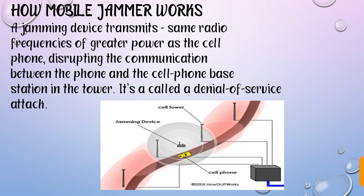How do Mobile Jammers work? This is a jamming device — you can see it in the figure. It transmits on the same radio frequency but with greater power than the existing signals. It sends signals with greater power, disrupting the communication between the phone and the cell phone base station tower. The jamming device sends the frequency with enough extra power to disrupt, and this is also called a denial of service attack.